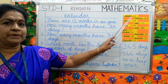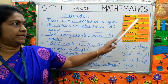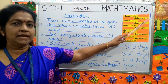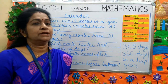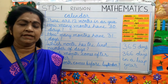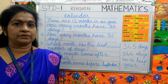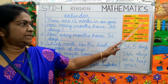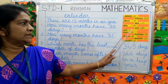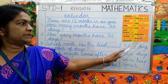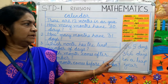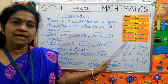January has 31 days. February has 28 days in a normal year and 29 days in a leap year. A leap year comes every 4th year, so 2020 was a leap year. Next leap year will be 2024. March has 31 days, April 30, May 31, June 30, July 31, August 31, September 30, October 31, November 30, and December 31 days. December is the last month of the year.